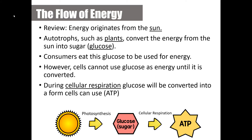Our cells are going to be able to use that sugar for energy. The problem is our cells can't use glucose directly as a source of energy — it has to first be converted into a usable form of energy that we call ATP. The process of getting glucose into a usable form is called cellular respiration.